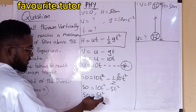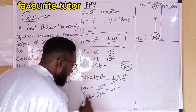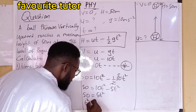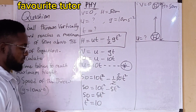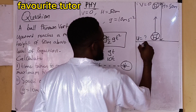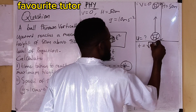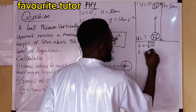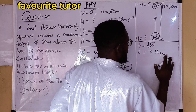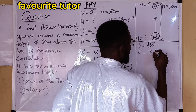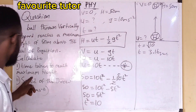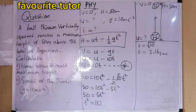Making t the subject of the formula: divide both sides by 5, giving t² = 10. Taking the square root of 10, therefore t ≈ 3.16 seconds. This is the time taken to reach maximum height.